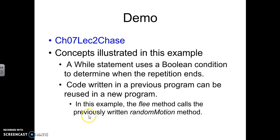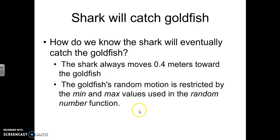In this example, the flee method calls for a previously written random motion method. So you'll get a chance to use the random motion method when we do this in-class example. Eventually, the shark is going to end up catching the goldfish. And how do we know the shark will eventually catch the goldfish? Because the shark is always moving at least 0.4 meters towards the goldfish. The goldfish's random motion is restricted by the minimum and maximum values used in the random number function. Don't worry about that right now. You'll get a chance to practice it and it'll make sense when we go through the example.